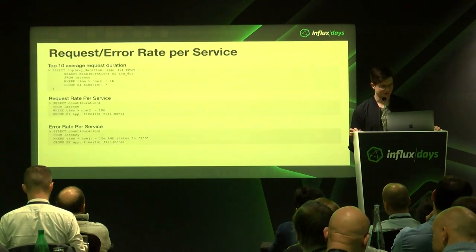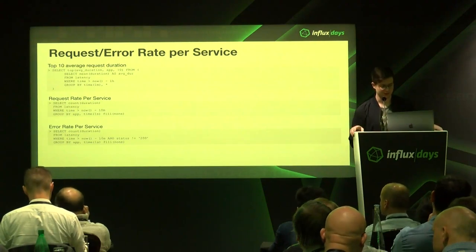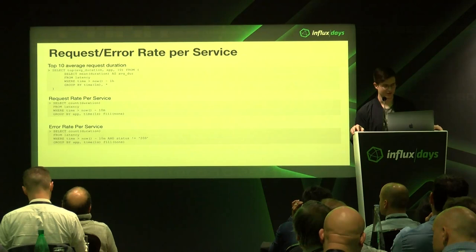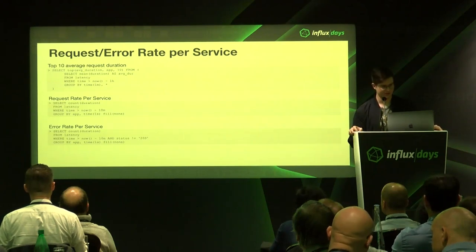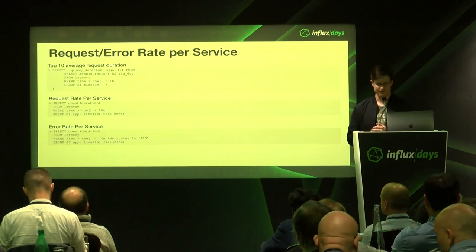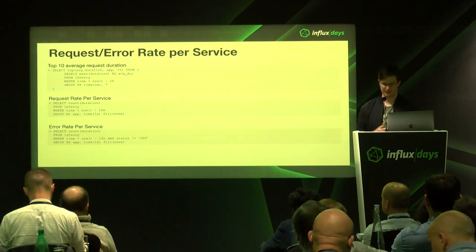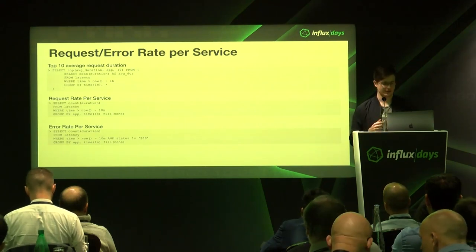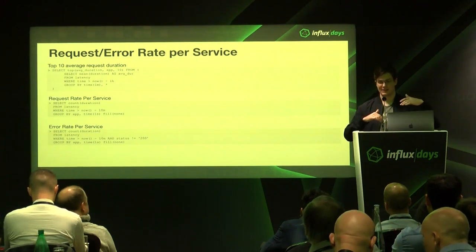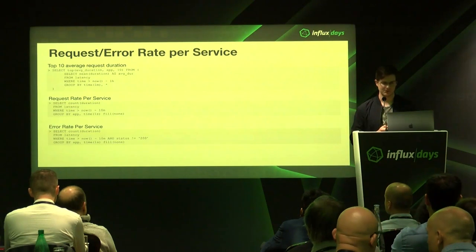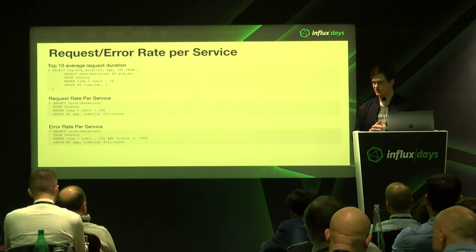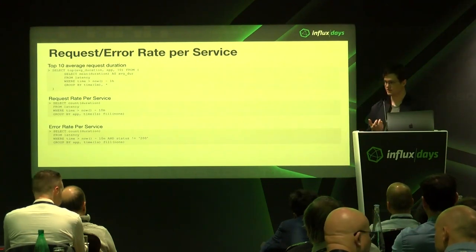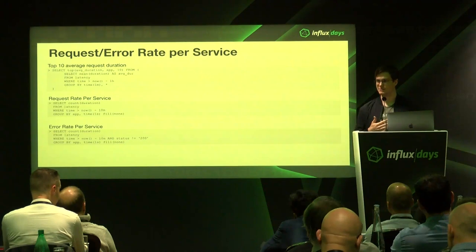Here are the InfluxQL queries to get those exact things. We have something like SELECT TOP(average_duration, app, 10) with a subquery where we compute the mean duration as average duration for the latency measurement for the last hour grouped into one-minute intervals. We also have the request rate and error rate. One thing that's difficult in InfluxQL is there's no easy way to look at the ratio of those things. You can plot them on a graph and visualization tools will let you do that in the browser, but combining two pieces into something coherent was something we struggled with in InfluxQL.